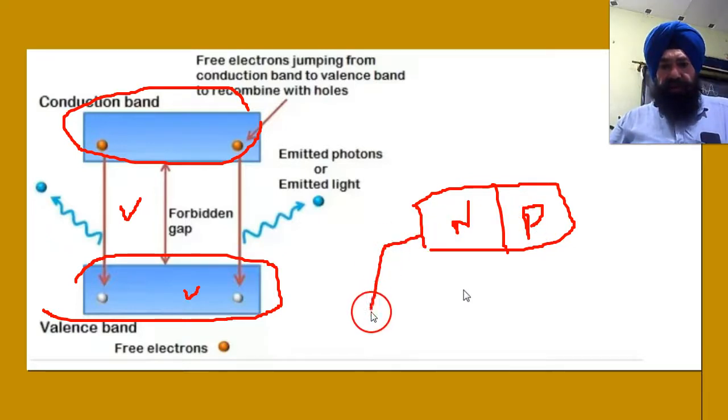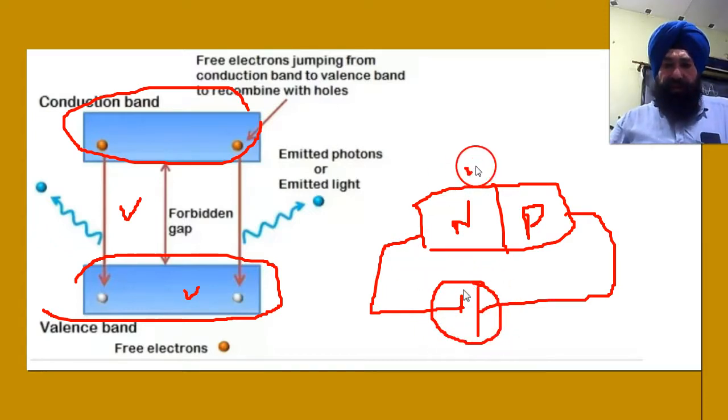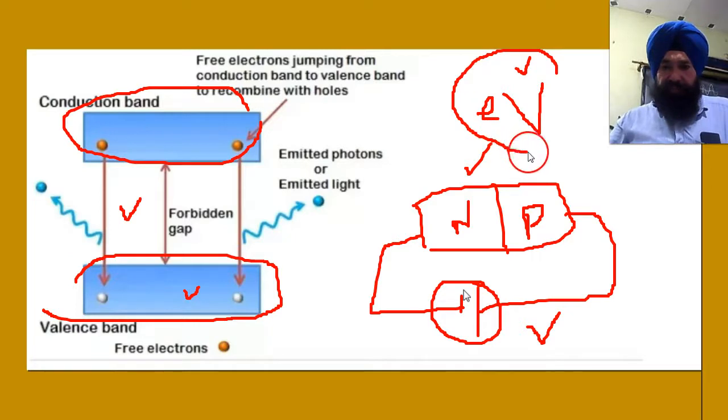When you connect the battery, charge will flow. But eV work done, this energy will be used to shift electron from valence to conduction. When electrons come to conduction band, they cannot remain there permanently.